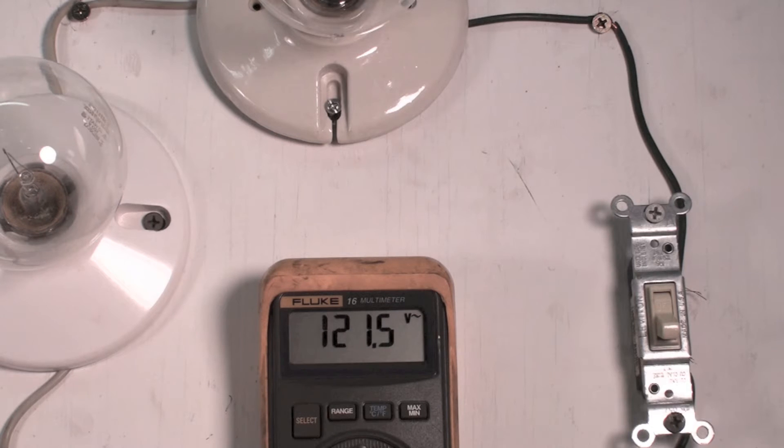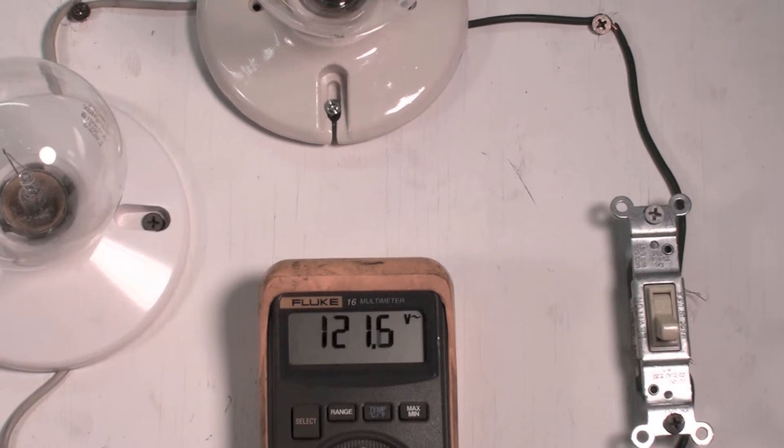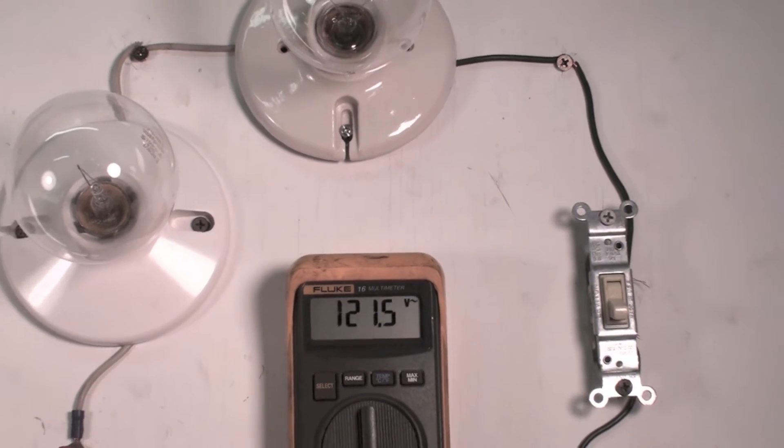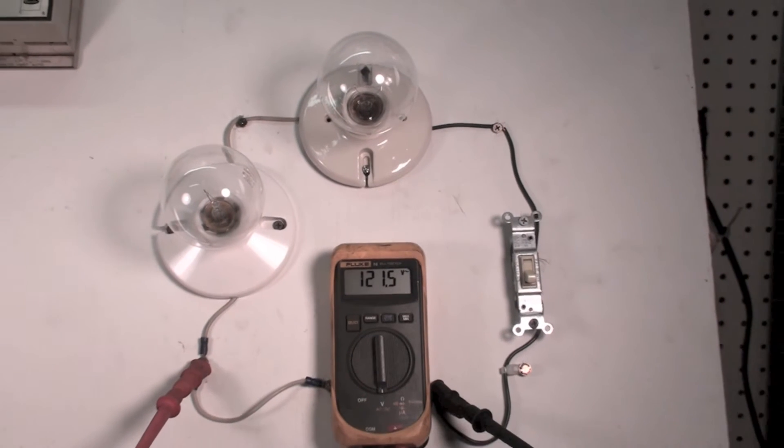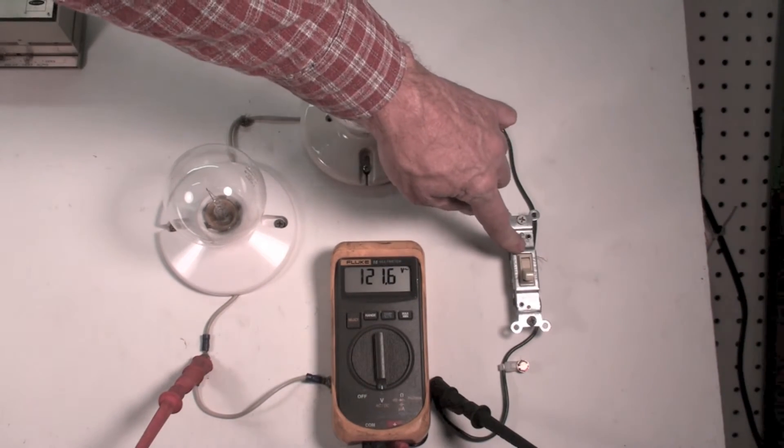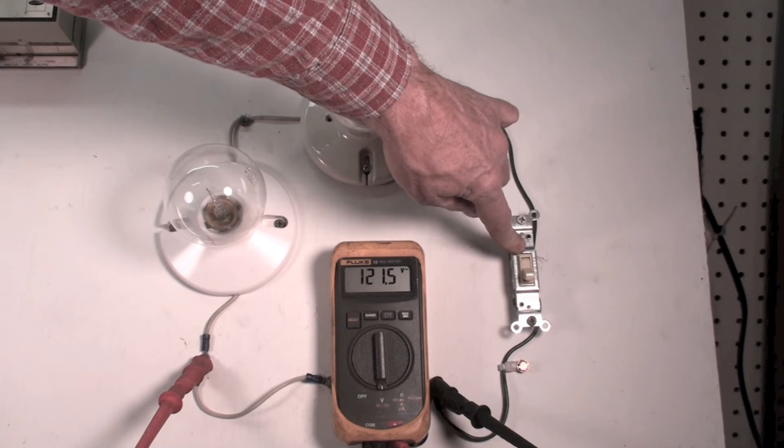And the meter is actually acting like a little load at this point. It's not really a load, it's not near enough, but I'm going to put this in parallel. Now I did this before when I put it on the switch - it was in parallel to the switch so the power went through the meter.